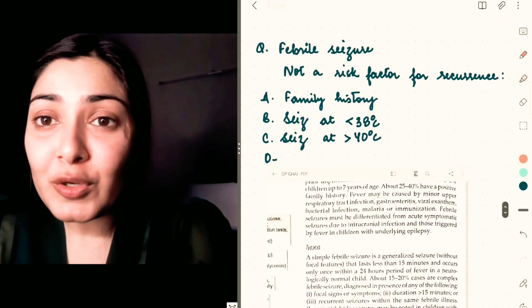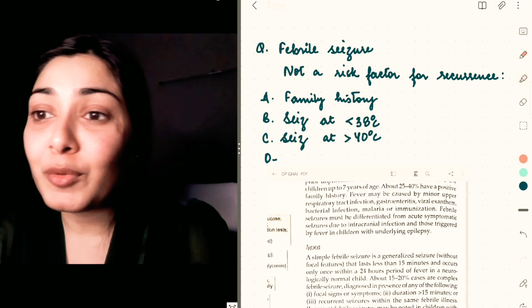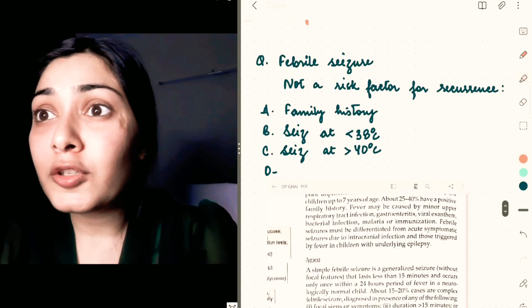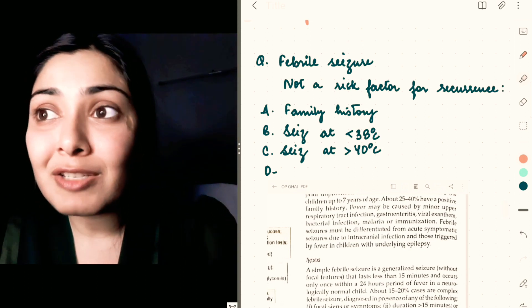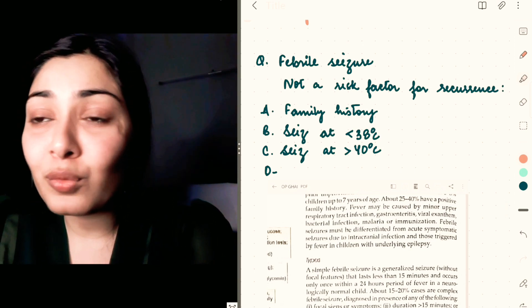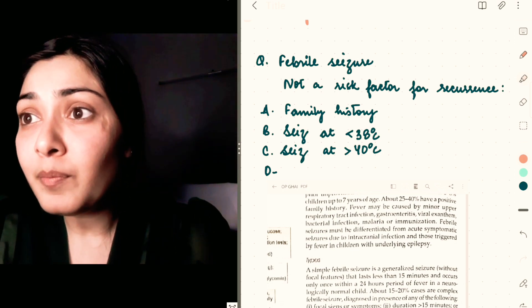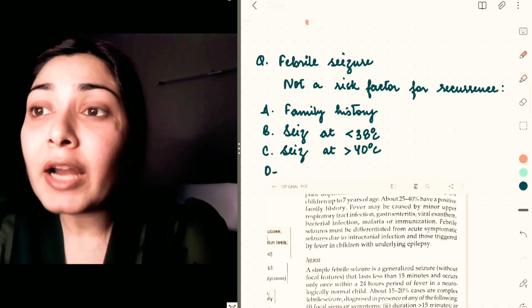Coming to the next question, it was a question on febrile seizure. Again, a clip from Ghai because you can easily rule out from these options. They asked what is not a risk factor for recurrence. I could recollect only three options. One was family history.